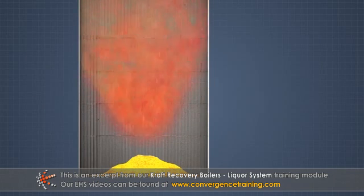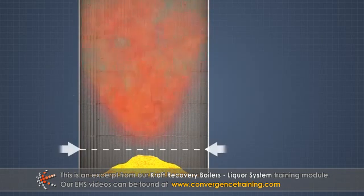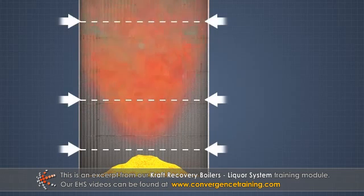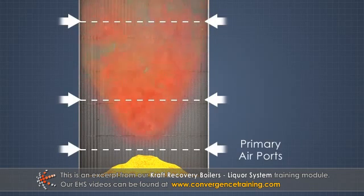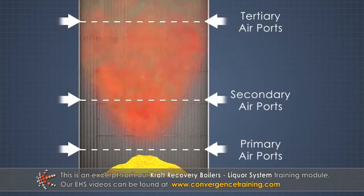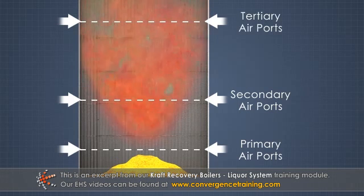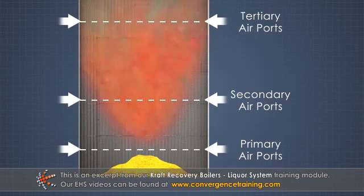The Craft Recovery Boiler Air System consists of three levels of air ports — primary, secondary, and tertiary — that allow heated air to enter the boiler for combustion.